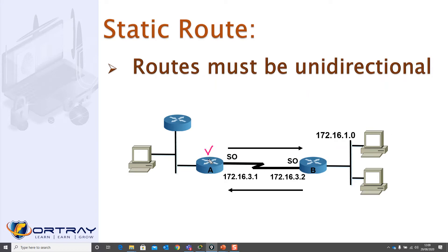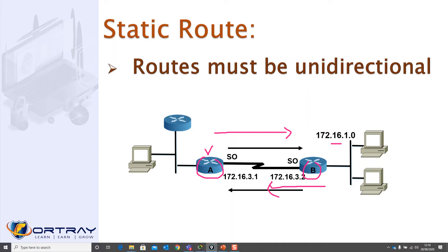If you are the administrator of this router, you will configure the direction of this route. And if you are the network administrator for the other router, you need to configure that direction as well. The route must be unidirectional, meaning that configuring a route for 172.16.1.0 doesn't automatically configure the return path.